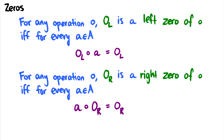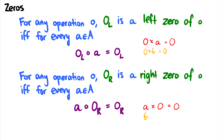The last thing we'll talk about are zero elements. For any operation, we say 0_L is a left zero if for every A in our set, zero combined with A gives us the zero back. With multiplication, zero times any number A equals zero. Since it's commutative, we also have A times zero equals zero. More concretely, zero times six equals zero, and six times zero equals zero.